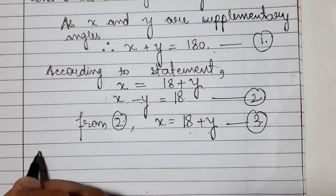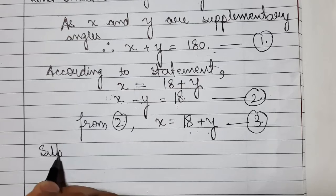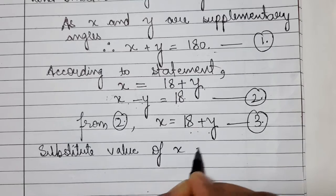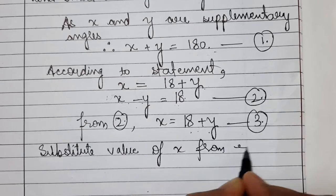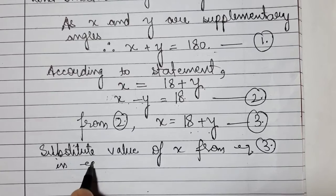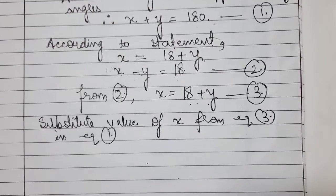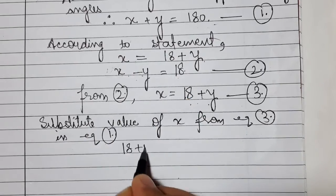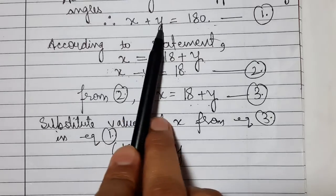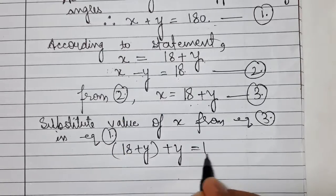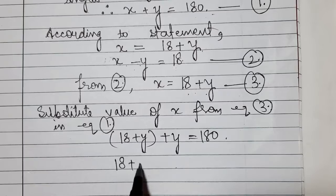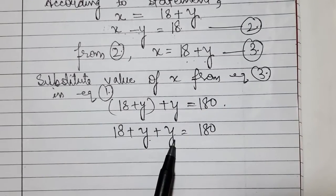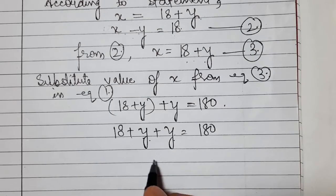Substitute value of x from equation 3 into equation 1. So x plus y equals 180 becomes: 18 plus y plus y equals 180 degrees. Now we open the bracket: 18 plus y plus y equals 180.